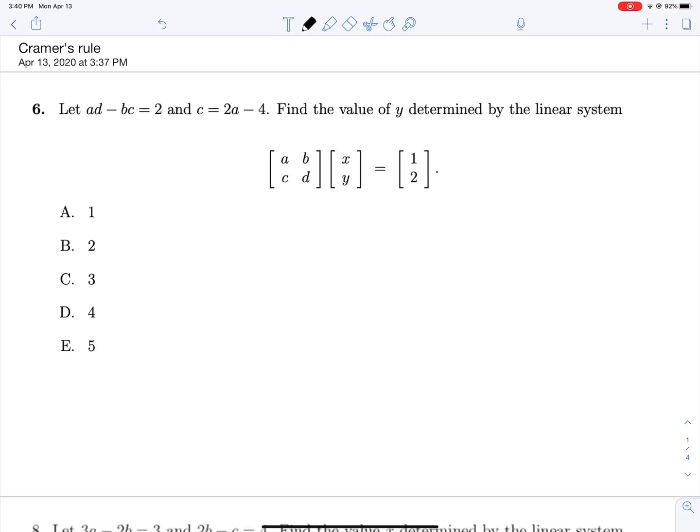We're told that AD minus BC equals 2 and that C is equal to 2A minus 4, and we're finding the value of Y determined by this linear system.